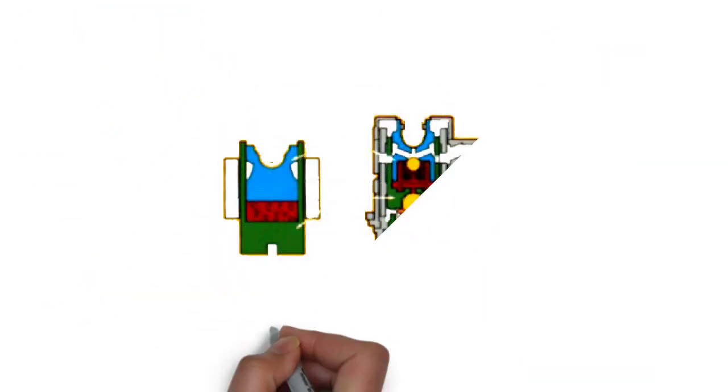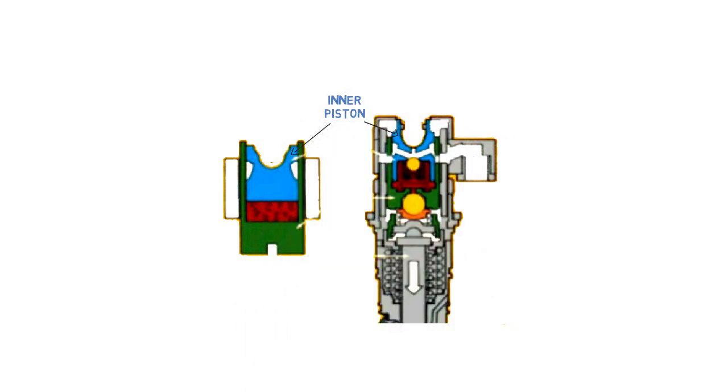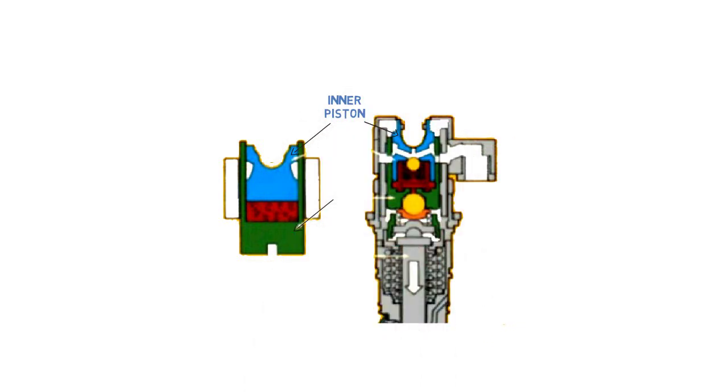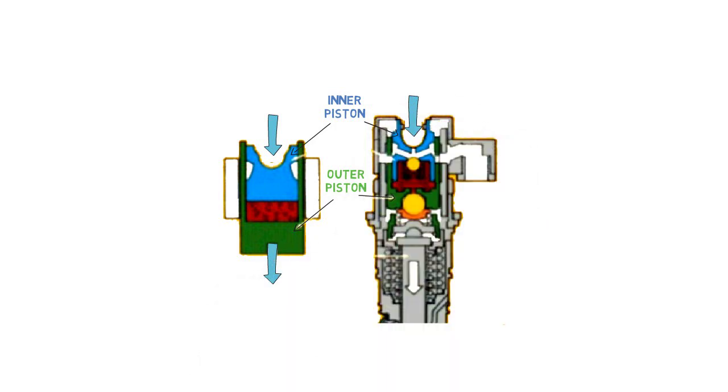Now let's examine the relationship between the STC tappet and injector plunger. For this example, we'll use a simple hydraulic device with an inner and outer piston. Notice how these pistons relate to the inner and outer pistons of the STC tappet.